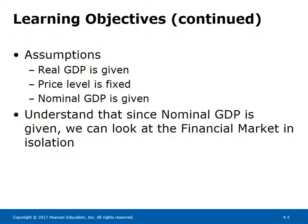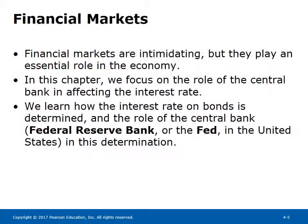Key assumptions: real GDP is given, price level is fixed, so nominal GDP is given. Since nominal GDP is given, we can look at the financial market in isolation. Financial markets play an essential role in the economy. In this chapter, we focus on the role of the central bank — the Federal Reserve or the Fed in the United States — in affecting the interest rate.